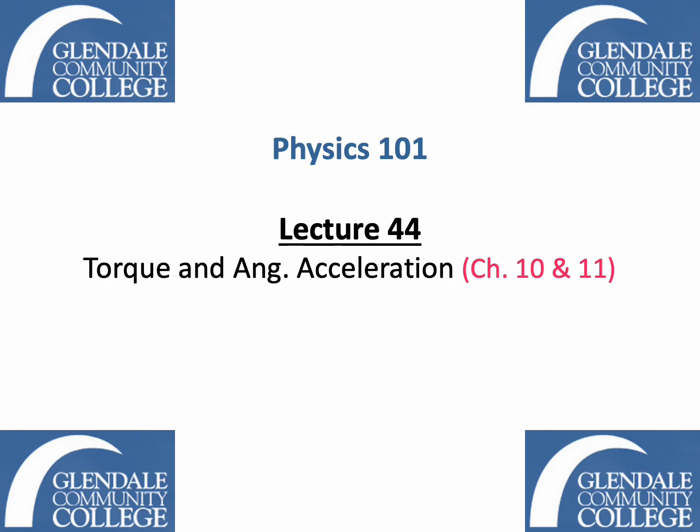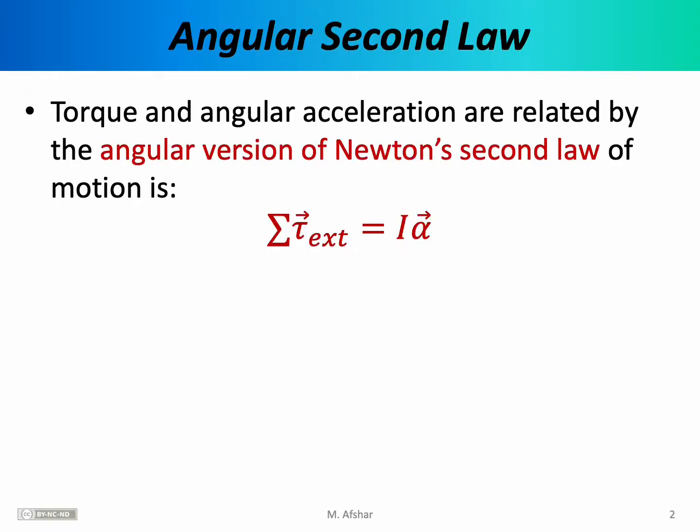This topic is covered in Chapters 10 and 11 of our textbook by Serway and Jewett. In our last lecture, we defined torque as the cause of angular acceleration, provided a formula for calculating torque, and saw that torque is the cross-product of position and force. However, we didn't make the connection between angular acceleration and torque very precise. In this lecture, we'll make that connection precise.